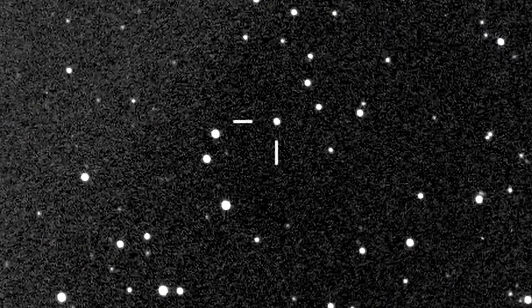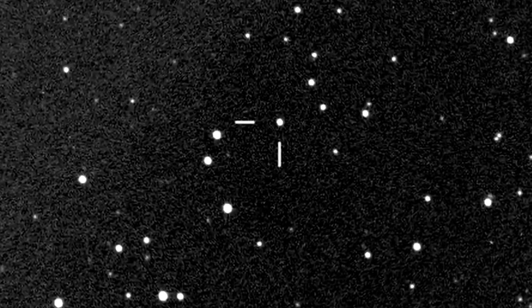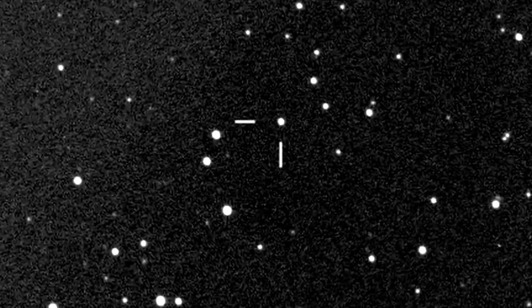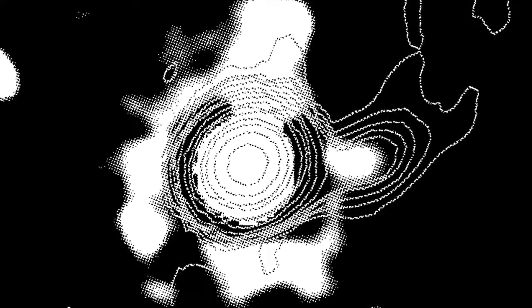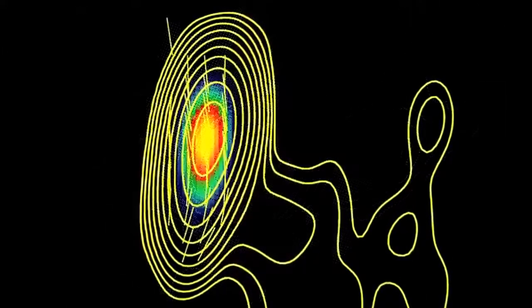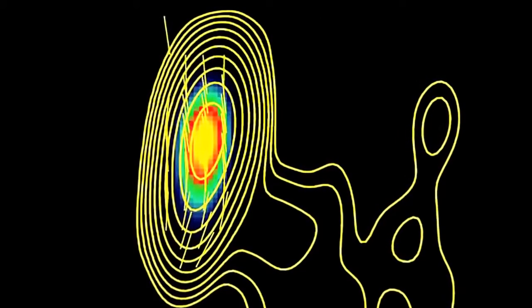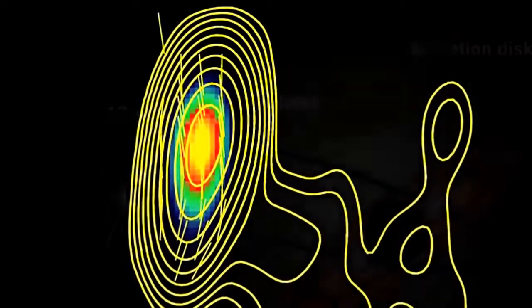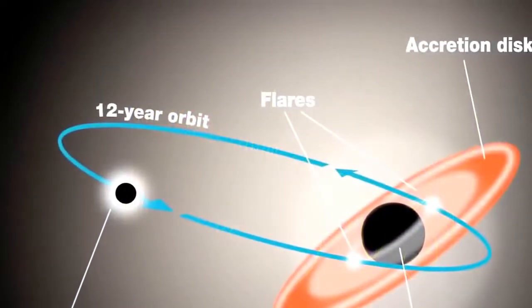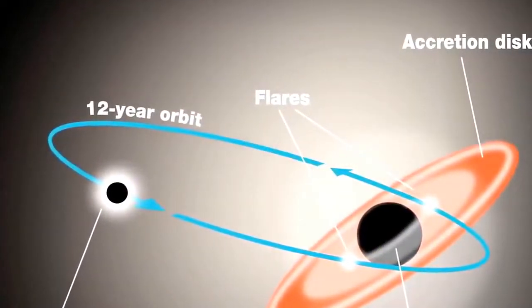That moment may be approaching for a quasar called OJ-287 at three and a half billion light years away. Flare-ups in the surrounding region have led astrophysicists to conclude that another black hole is flying around it. By measuring the giant's gravitational hold on its companion, astronomers estimate its mass at 18 billion solar masses. For a time, OJ-287 was the largest black hole ever detected. It no longer is.